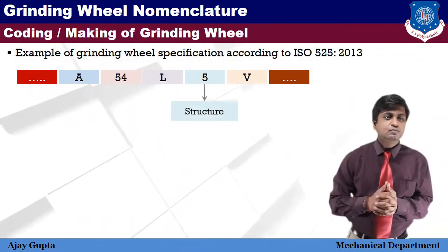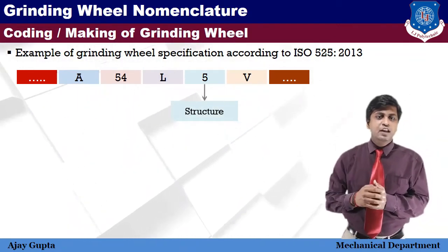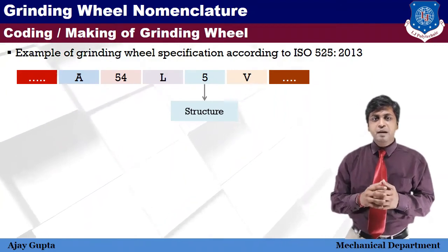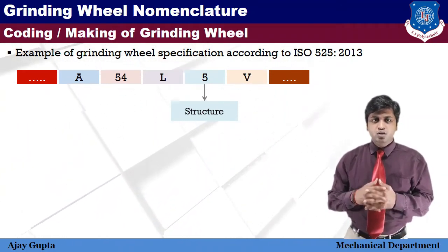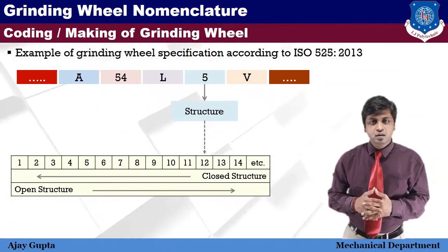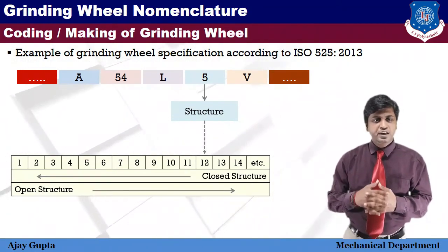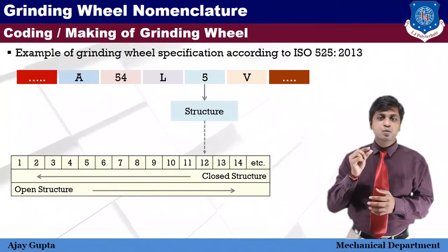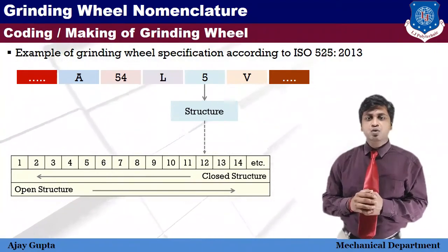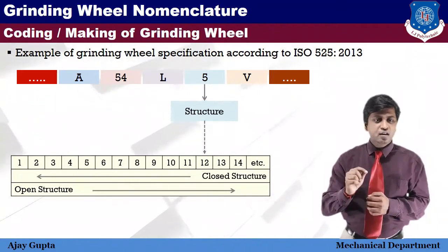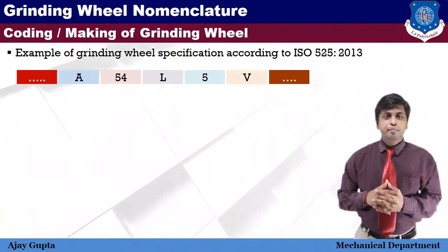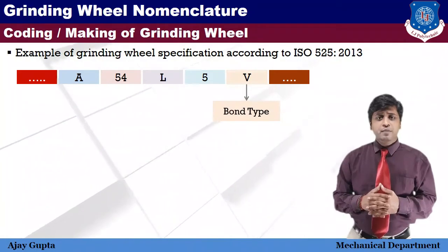The fifth symbol is structure. It includes the number of abrasives and pores in a unit volume, and the distribution of abrasives and pores in the grinding wheel. On the basis of structure, grinding wheels are called close (dense) or open. In close structure, the porosity between abrasive particles is less; in open structure, the porosity is more. Structure is coded in numbers — higher numbers indicate open structure, as shown in the chart.